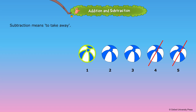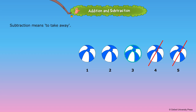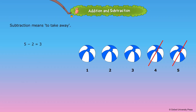One. Two. Three. The number of balls left is three. We say five minus two is three. We can also write the numbers vertically and subtract.